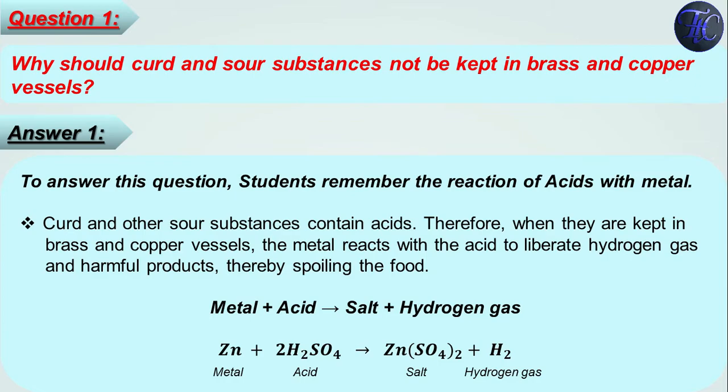Curd and other sour substances contain acids. Therefore, when they are kept in brass and copper vessels, the metal reacts with acid to liberate hydrogen gas and harmful products, thereby spoiling the food.